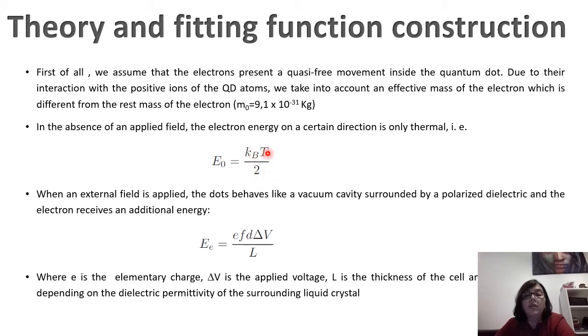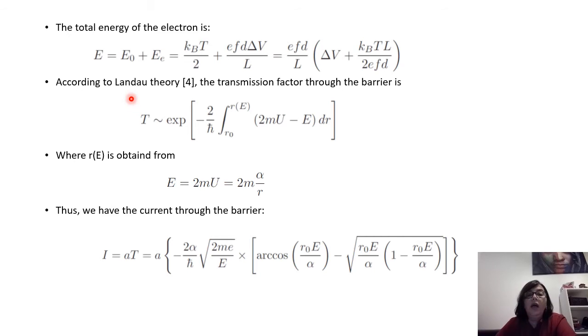When we apply an external field on the cell, the dot behaves like a vacuum cavity surrounded by a polarized dielectric. And the electron receives an additional energy from the applied field. This energy is given by this form: EE = e F D ΔV / L. E is the elemental charge of the electron. F here is a parameter depending on the electric permittivity of liquid crystal. D is the diameter of the quantum dots. ΔV is the applied voltage. And L is the thickness of the cell.